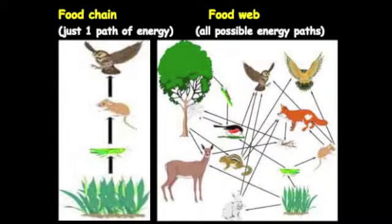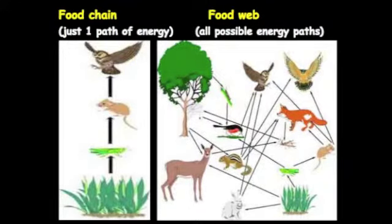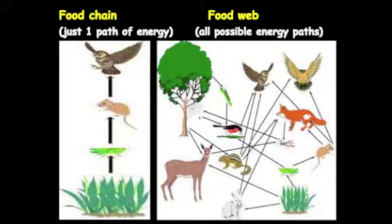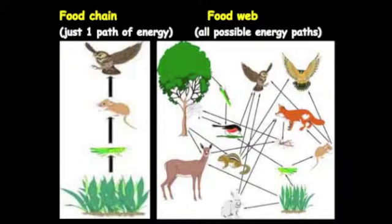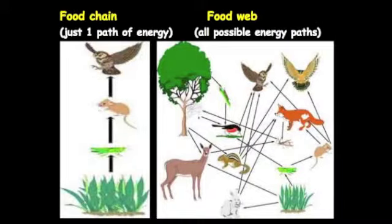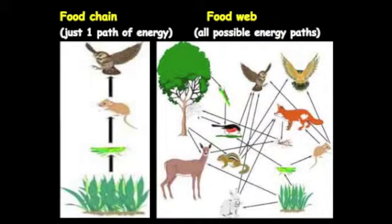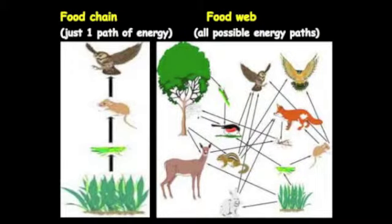The main difference between a food chain and a food web is that the food chain consists of just one path of energy, while the food web consists of all possible paths of energy. In the food chain, energy goes from one to the next in a single line. In the food web, it can go left, right, forward, backwards — any direction. Under this part of your notes is a little worksheet that you're going to complete on a food web.